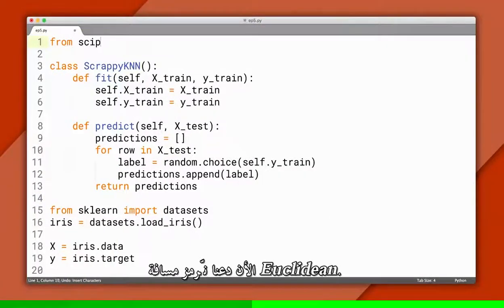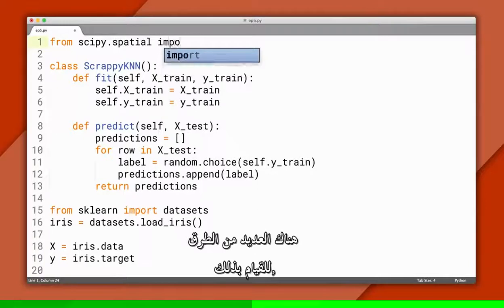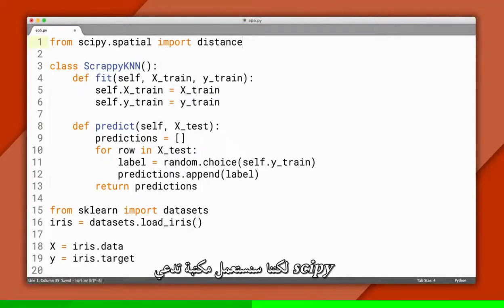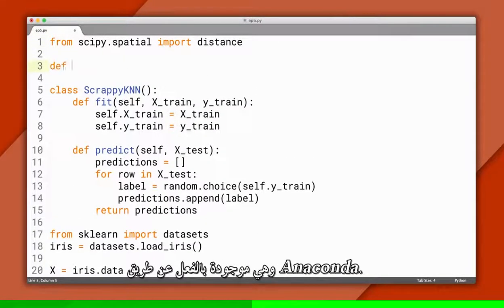Now let's code up Euclidean distance. There are plenty of ways to do that, but we'll use a library called SciPy that's already installed by Anaconda.